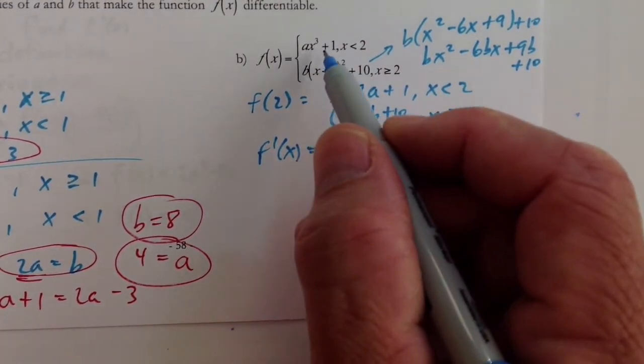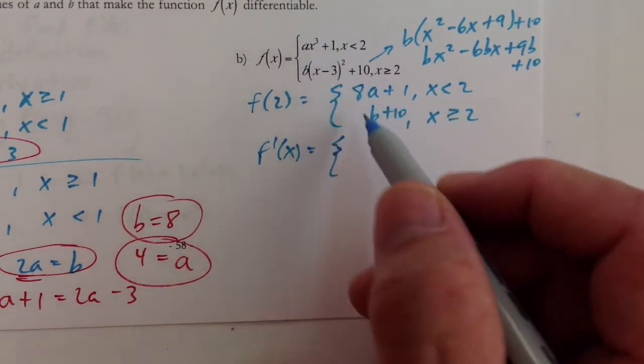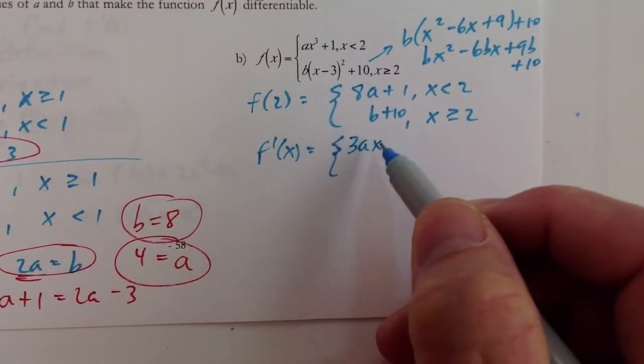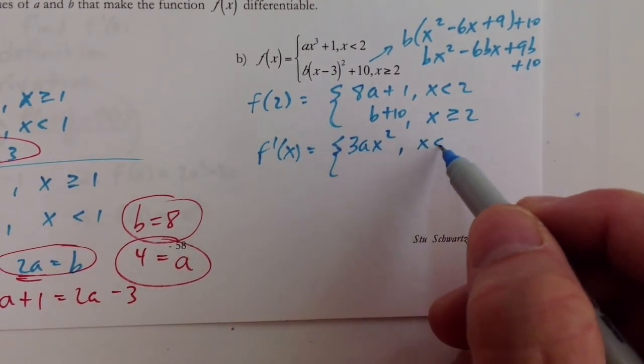So the derivative of the top piece would be, remember, take the exponent, multiply it by the constant out in front, so 3a, and then subtract 1 from the exponent. That's where x is less than 2.